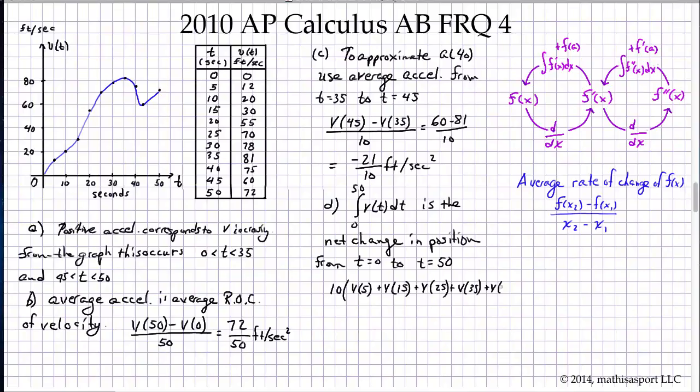And we can look up each of these values: V(5) is 12, V(15) is 30, V(25) is 70, V(35) is 81, V(45) is 60. Add all those up: 30 plus 70 is 100, 81 plus 60 is 141, that makes 241 plus 12 is 253. We have 10 times 253 equals 2530 feet. That's all there is to it.